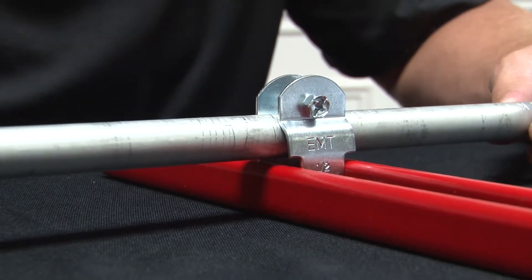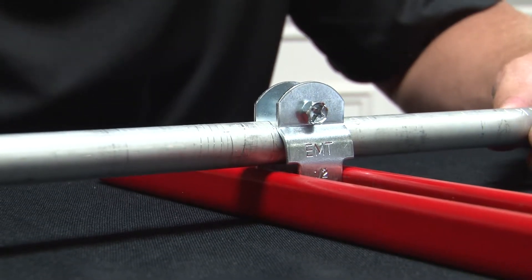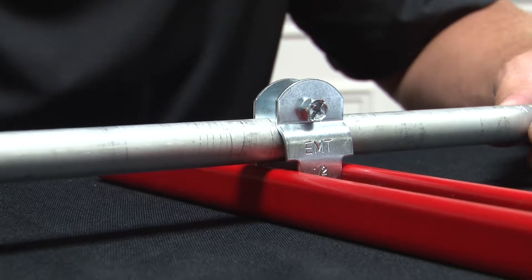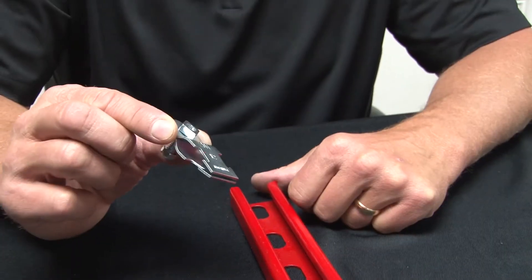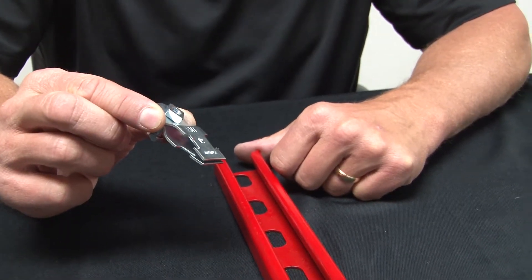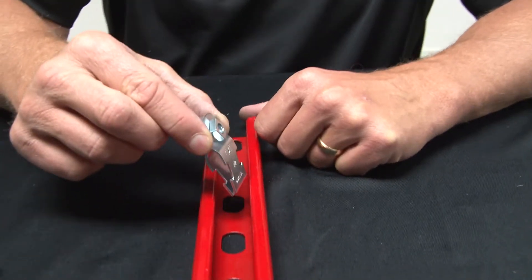Garvin Industries strut straps are one of the most convenient ways to install conduit across strut channel. For fast and easy installation of strut straps, simply align it in the channel.